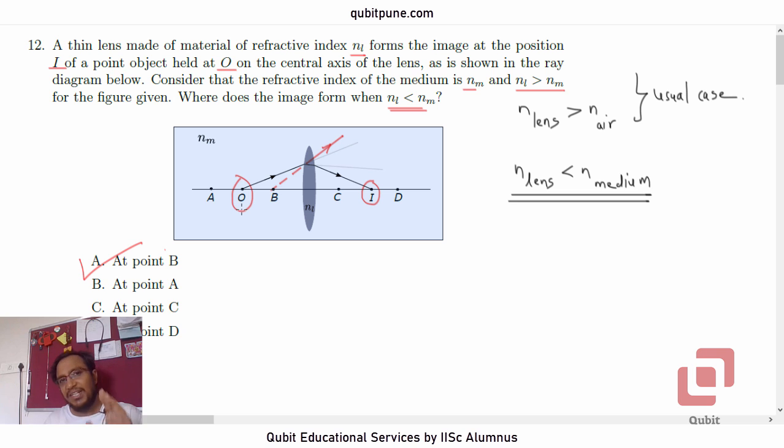The logic is very simple. For a lens with given refractive indices combination, typical or usual case, it is going to bend inwards.